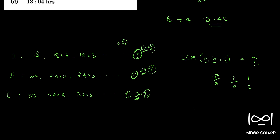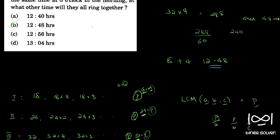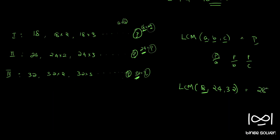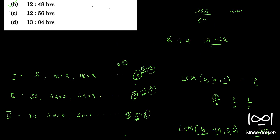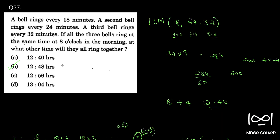So P will be in all three rows. That is why we took LCM of 18, 24, and 32. The number we got — 288 — is the smallest number that is common in all three rows, so it divides with 18, and divides with 24, and divides with 32. That is why we use the concept of LCM. I hope that is clear. That is the solution to question 27.